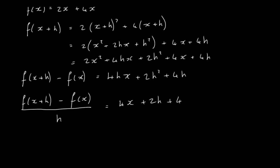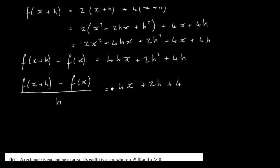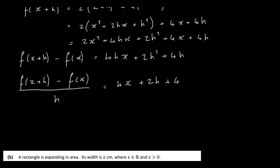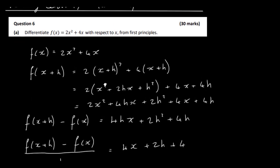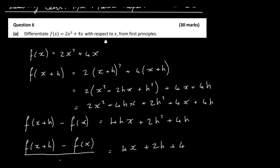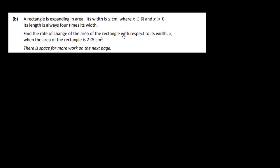Next we get the limit of both sides. The limit as h goes to 0 of [f(x+h) minus f(x)] divided by h — this is our definition of differentiation. As h goes to 0, the 2h term becomes 0, and we're just left with 4x plus 4. That's our answer from first principles. You can check it the quick way and you do get 4x plus 4. So that's the first part of the question.